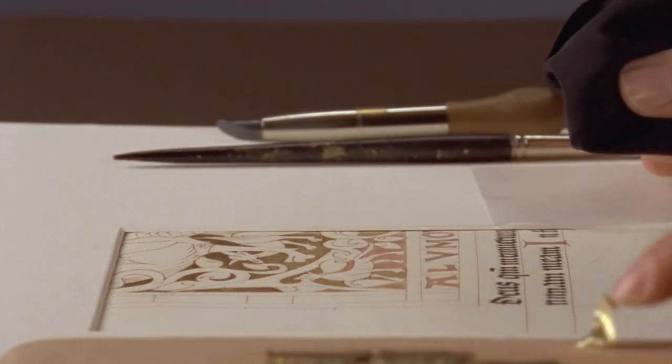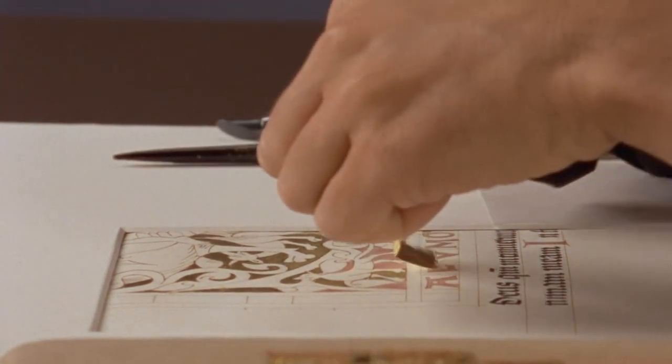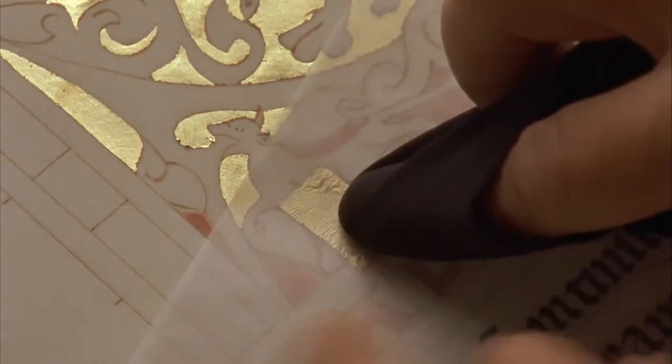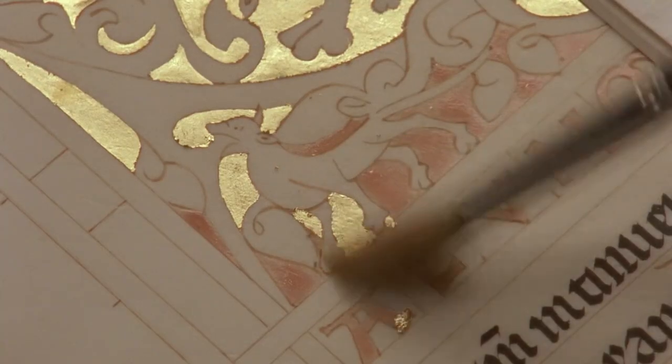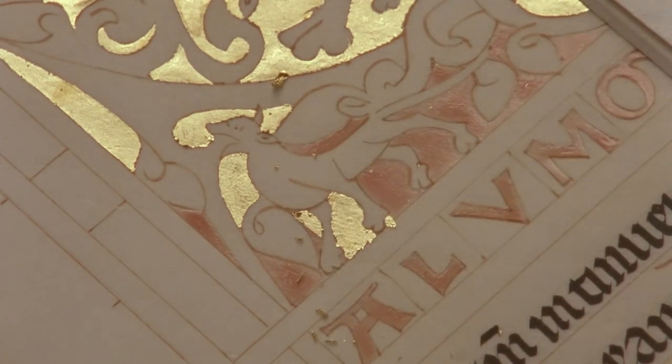Once the gum base dried, the moisture in the illuminator's breath was enough to make the small piece of gold leaf stick to the page. Then the illuminator brushed away the excess and polished the gold leaf.